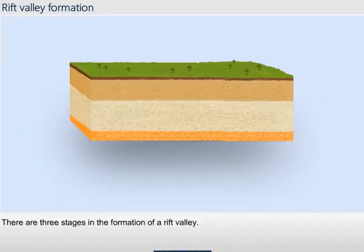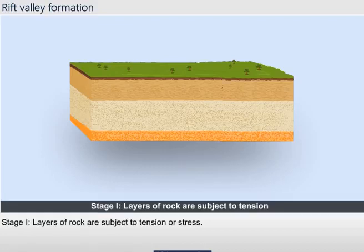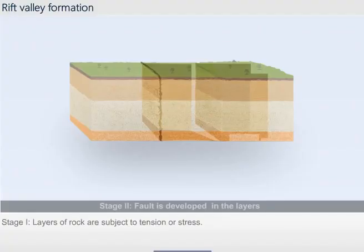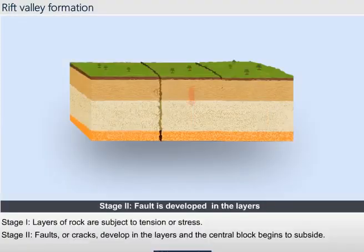There are three stages in the formation of a rift valley. Stage 1: layers of rock are subject to tension or stress. Stage 2: faults or cracks develop in the layers and the central block begins to subside.